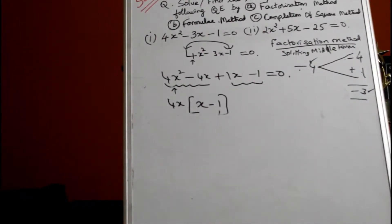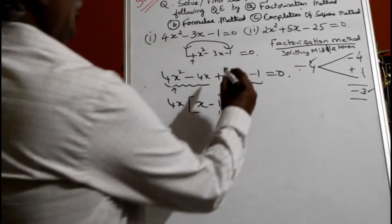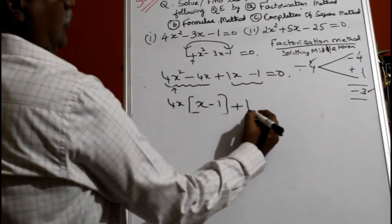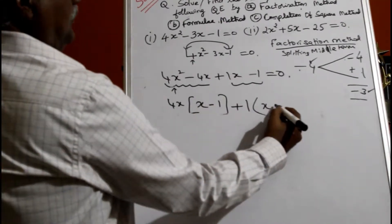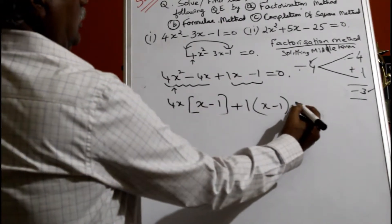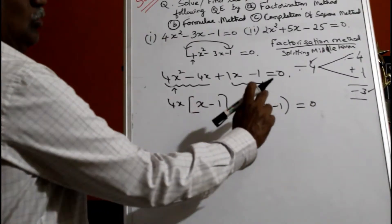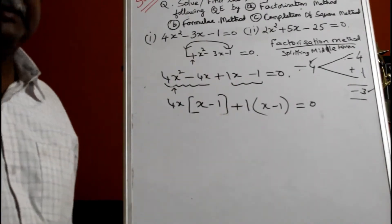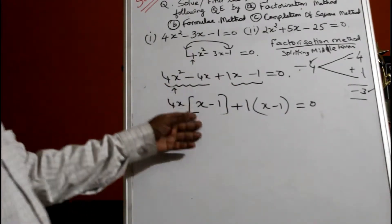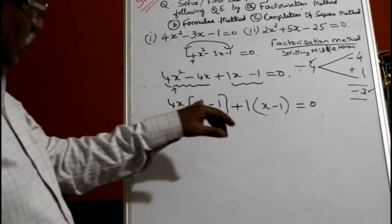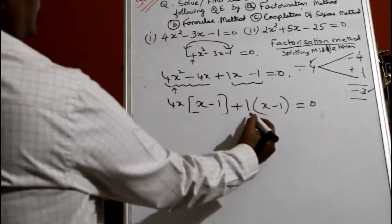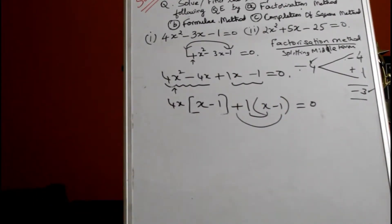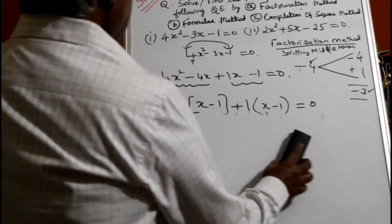In the next two terms, 1 is common — start a bracket. What you get is x minus 1 equal to 0. Don't put it blindly — it's better to learn and understand. Check: 1 into x is 1x, and 1 into minus 1 is minus 1. This is called grouping of terms and taking out a common number.